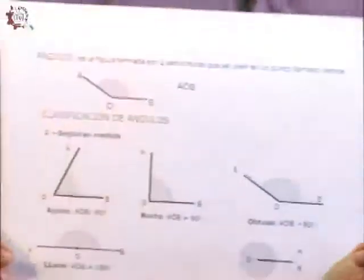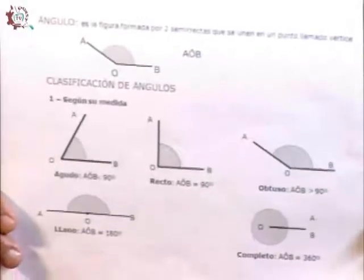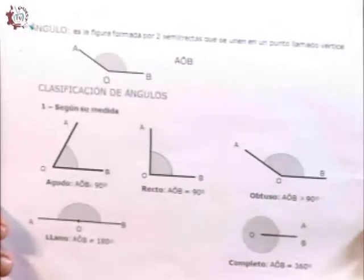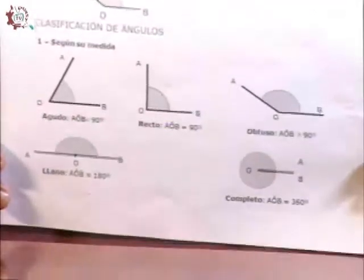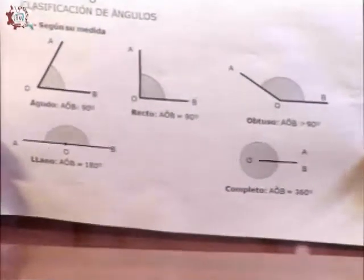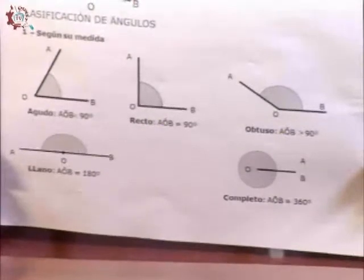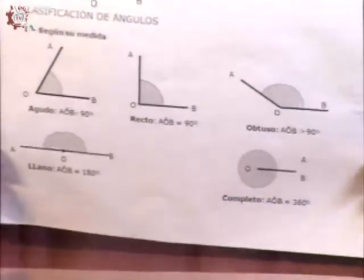Aquí están gráficamente cada uno de ellos. Empezamos por el agudo, posteriormente sigue el ángulo recto, el ángulo obtuso, el ángulo llano o de 180 grados, el ángulo completo. Y la definición de ángulo ya la teníamos.